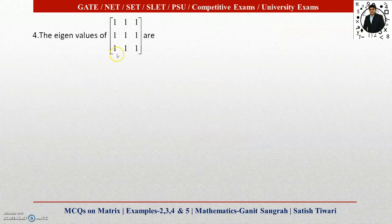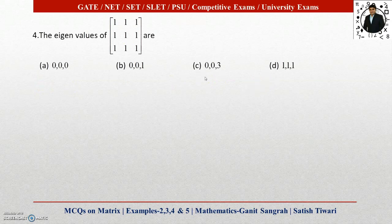Next question: The eigenvalues of this matrix are – we have 4 options. As I told you, the sum of eigenvalues is the sum of the principal diagonal elements. So 1 + 1 + 1 = 3. The sum of eigenvalues is 3 in option C and also in option D. So out of these two options, one will be correct.